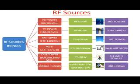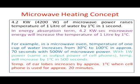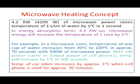Try to compare this with a microwave oven. If you put 1 cup of water, it takes about 1 minute or so. 4.2 kW of microwave power raises the temperature of 1 liter of water by 1 degree centigrade in 1 second. That much power is required to heat the temperature by 1 degree centigrade. In a microwave oven, temperature of 1 cup of water increases from 30°C to 100°C in approximately 70 seconds — meaning in 1 second, temperature goes up by 1 degree centigrade — and that is from 500 Watt of power.